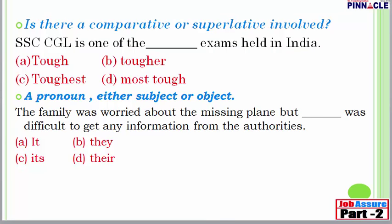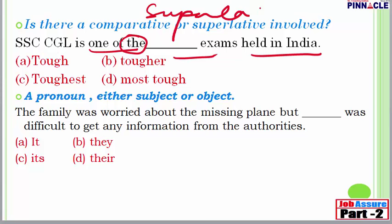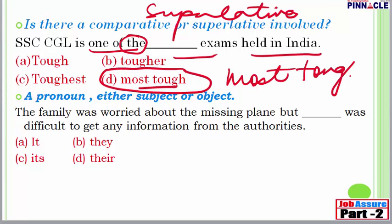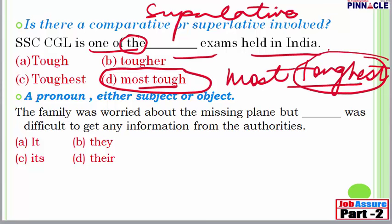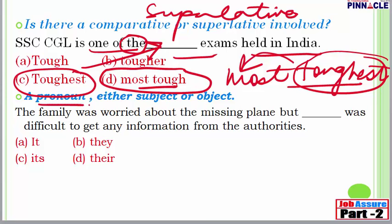You should know the right usage of relative pronouns, connectors, prepositions, and adverbs. Next, if a comparative or superlative is involved, you should select the right form of the adjective. For example: 'SSC CGL is one of the ___ exams held in India.' Since 'one of the' is generally used with the superlative degree, the answer is 'toughest.' Note: 'most toughest' is incorrect — 'toughest' is already superlative.